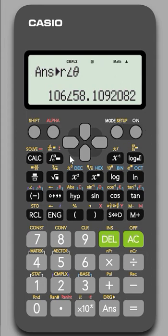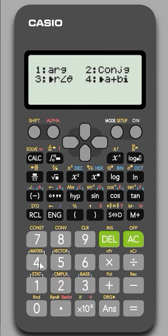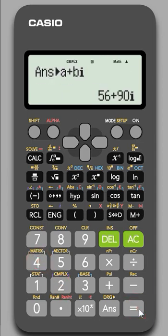If you would like to convert this into polar form, let's again hit shift 2 and execute 4. It will convert into a plus bi format.